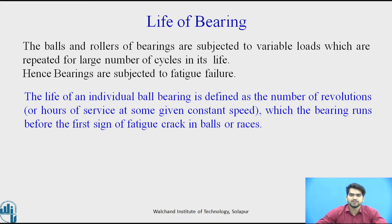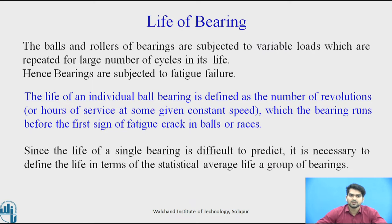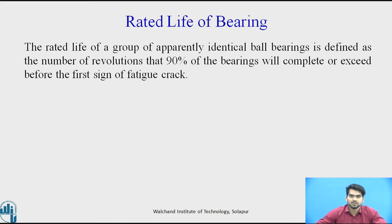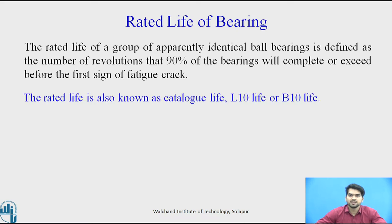The definition is: the bearing runs before the first sign of the fatigue cracks in the balls or the races. Since it is impossible or difficult to predict the life of a single bearing, we can define the life in terms of the statistical average life of a group of bearings. The rated life of a group of apparently identical ball bearings is defined as the number of revolutions that 90 percent of the bearings will complete or exceed before the first sign of fatigue crack. In the catalog, it is known as L10 life or B10 life.